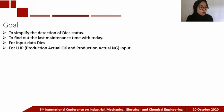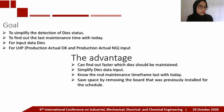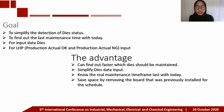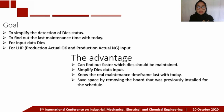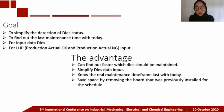That was a brief background. Now we will discuss the goals and advantages of the created information system. The goal is to simplify the detection of die status, find out the last maintenance time compared to today, input data for dice, input LHP or production actual OK, and input production actual NG. The advantage is: faster identification of which dice should be maintained, simplified dice data input, real maintenance time frame from last to today, and saving space by removing the board that was previously installed for the schedule.